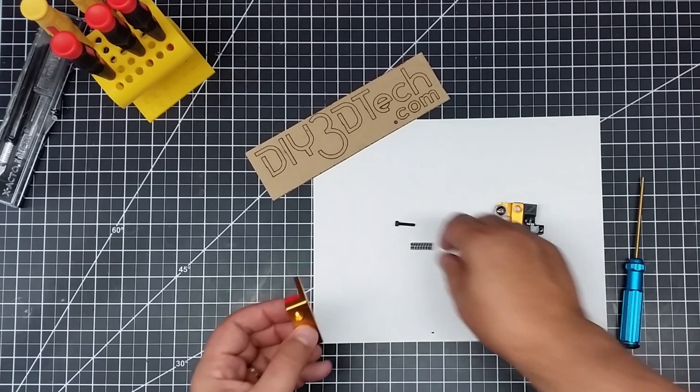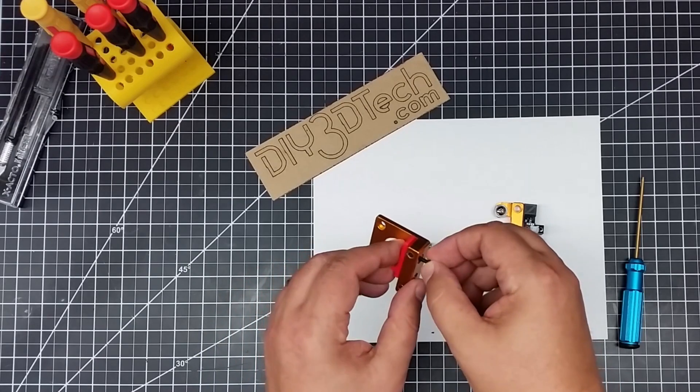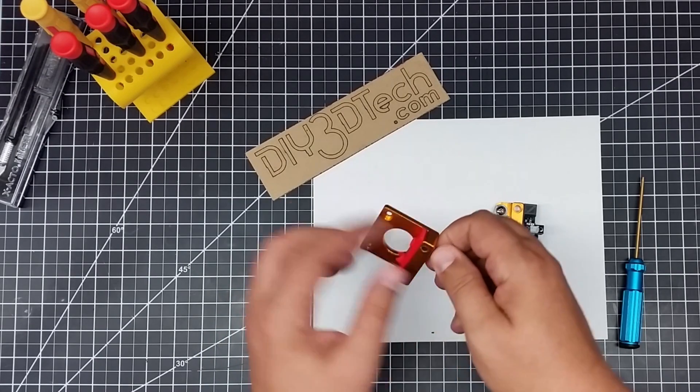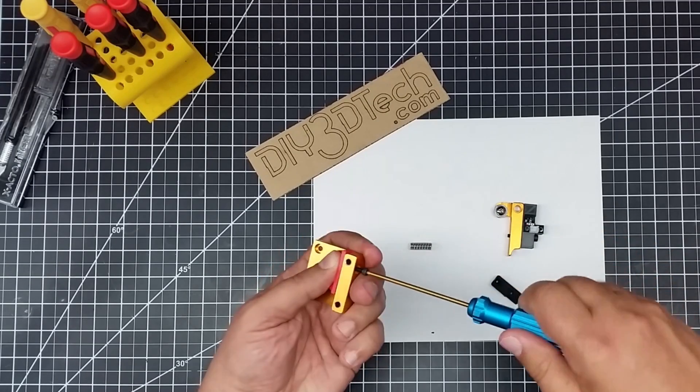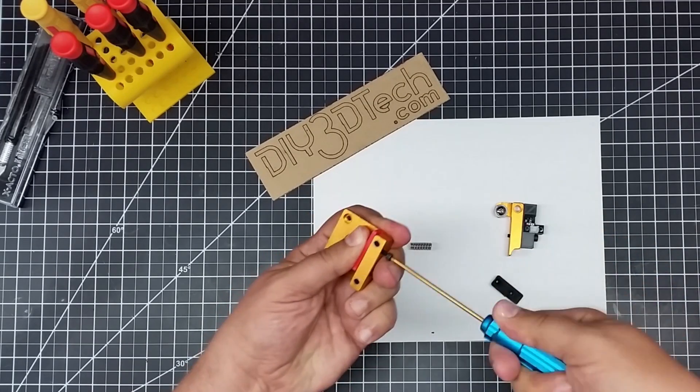And then we're going to take this M3 and put it back in here. We're just going to take this - I think this is a 2.5 - and self-thread this back through.